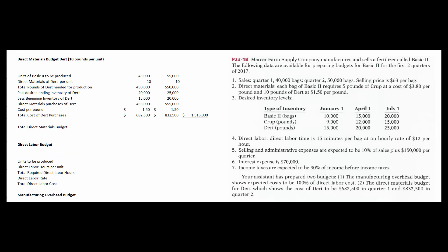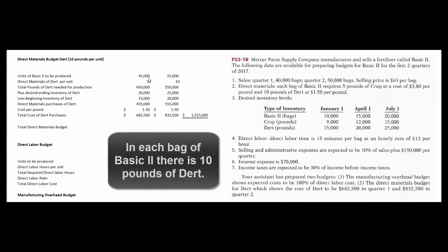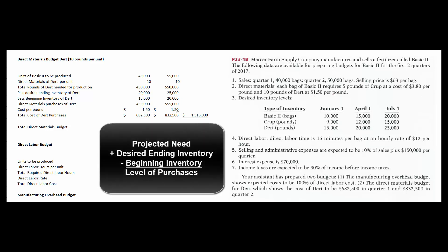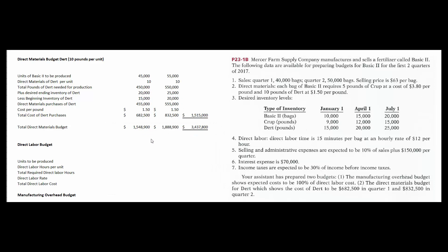We do the same thing for dirt, the other component of our fertilizer. We're going to make 45,000 units and there are 10 pounds of dirt per bag, so we need 450,000 pounds to meet production. Adding 20,000 pounds desired ending inventory and subtracting 15,000 pounds beginning inventory, our purchases of dirt are 455,000 pounds for quarter one. The same logic applies for quarter two, and at $1.50 a pound, our direct materials budget for dirt is $1,515,000. Adding crop to dirt gives us a total direct materials budget of $3,437,800 for the first half of the year.